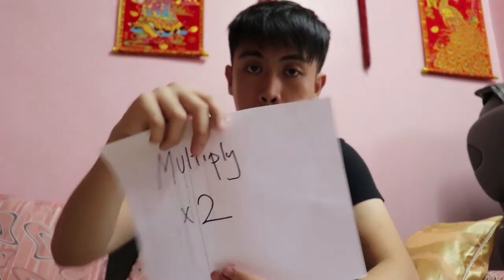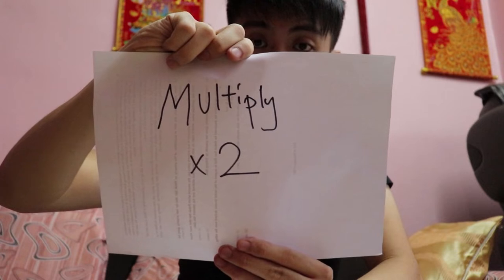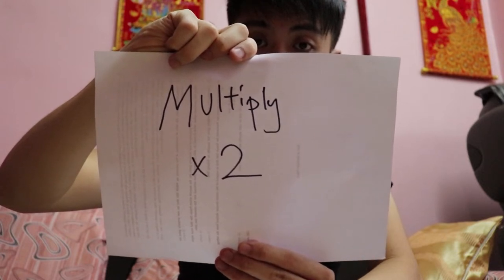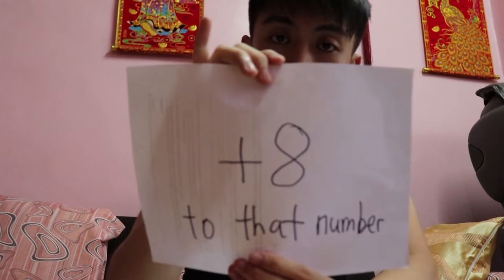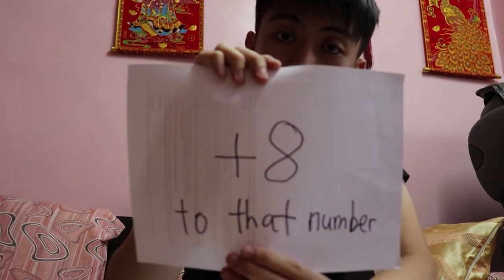Okay, good. So the second step — I would like you to multiply the number that you have by two. Alright, got it? Okay, next. I would like you to add eight to the number that you already have. Plus it with eight. Alright?